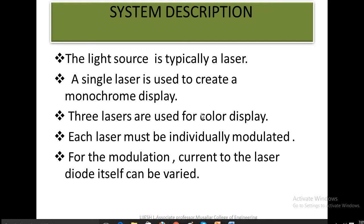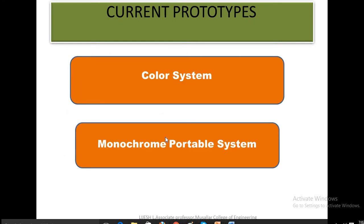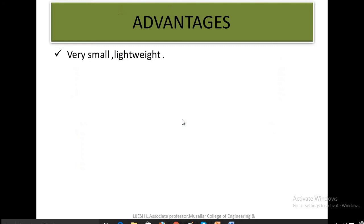Each laser must be individually modulated for the color screen. For the modulation, current to the laser diode itself can be varied. By varying the current to the laser diode, we can vary the modulation scheme. Current prototypes are two types: color systems and monochrome systems. Its advantages are very small, lightweight, and since this is a micro machine application of micro electromechanical systems, obviously it will be very small and lightweight.